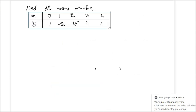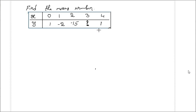Let us see how to find missing terms in a table using the difference method. So let's assume this is the given data: at x=0, the function takes value 1; at x=1, it takes -2; at x=2, it takes -15; at x=3, we don't know what it is — that is the missing number. At x=4, it is 1.